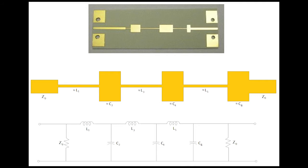The transition from high-impedance to low-impedance actually causes a resonance. As you cascade these together, you can see in the schematic below a depiction of the low-pass filter, which is really made up of these differences in impedance.